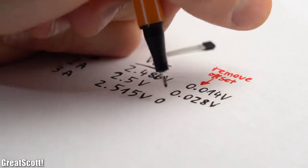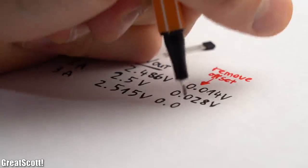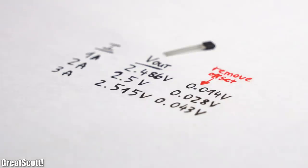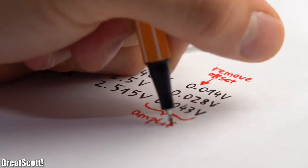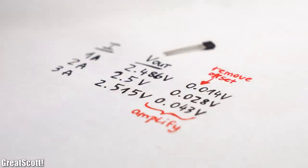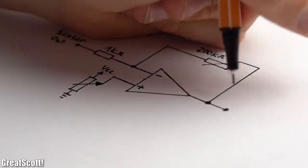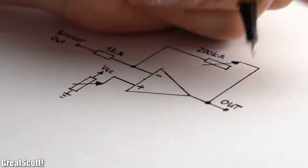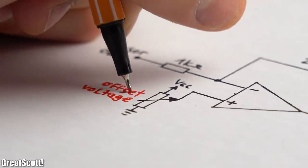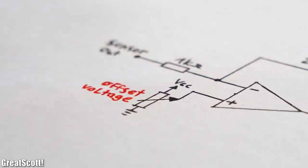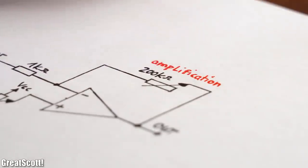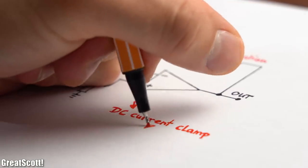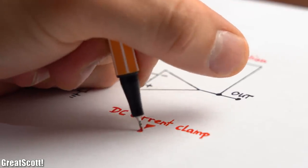So what we need next in order to use this DIY current clamp with an oscilloscope is a suitable circuit that gets rid of the offset voltage and amplifies the remaining linear section of the sensor voltage. Now a schematic that I came across on the internet quite often for such a task looked something like this. And while we can adjust the offset voltage with this trimmer and fine tune the amplification factor with this trimmer, this circuit is still only suitable for a DC current clamp and not an AC-DC current clamp.